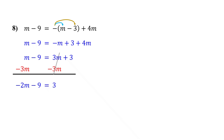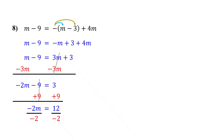This is now a two-step equation. So next, isolate negative 2m by adding 9 to both sides. On the left, the 9s cancel out, leaving negative 2m. 3 plus 9 equals 12. Finally, divide both sides by negative 2 to get m by itself. The negative 2s cancel out, leaving just m. 12 divided by negative 2 is negative 6. So the solution is m equals negative 6.